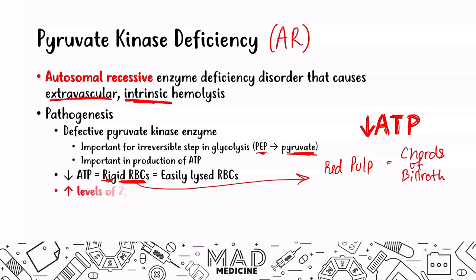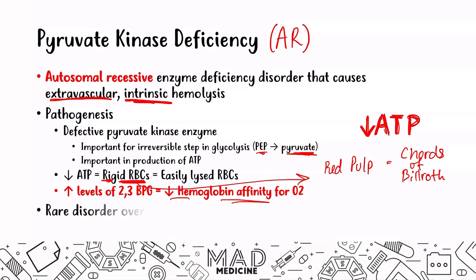You are also going to see high levels of 2,3-BPG, and that leads to decreased hemoglobin affinity for oxygen. Overall, this is a very rare disorder — you're not going to see this often in the clinical setting — but you need to know for Step 1 that it is a very important cause of hemolytic normocytic anemia, especially when it comes to testing.